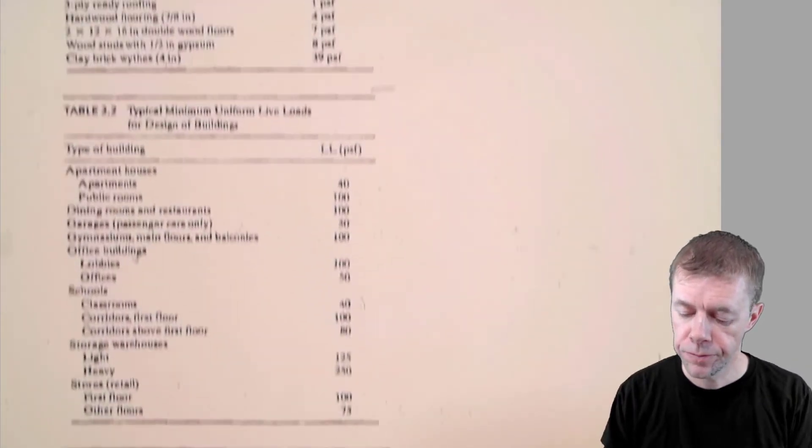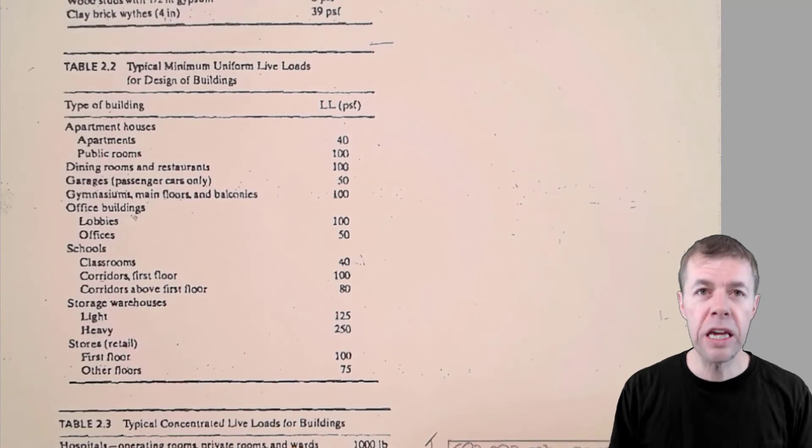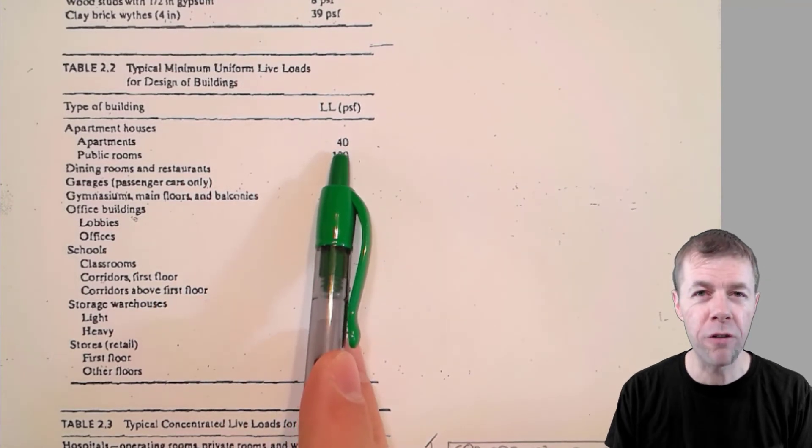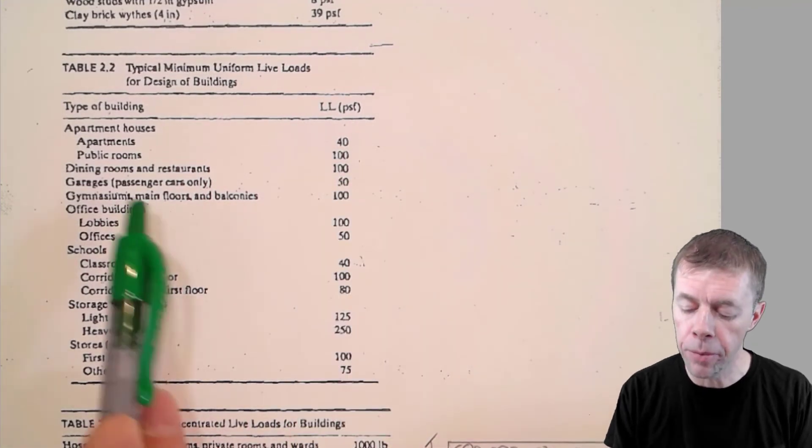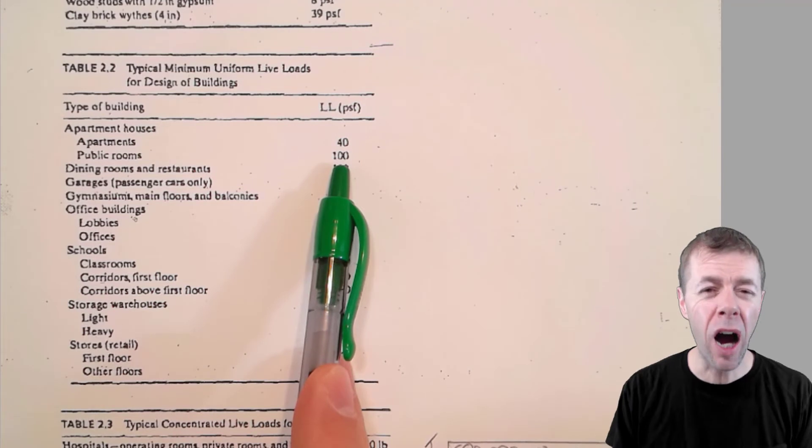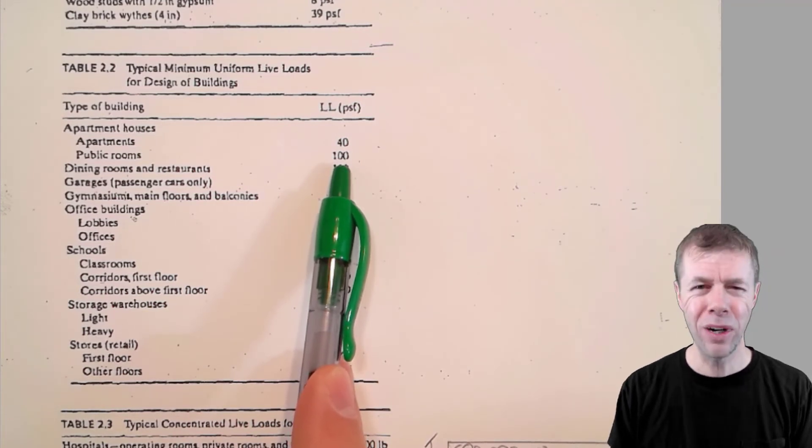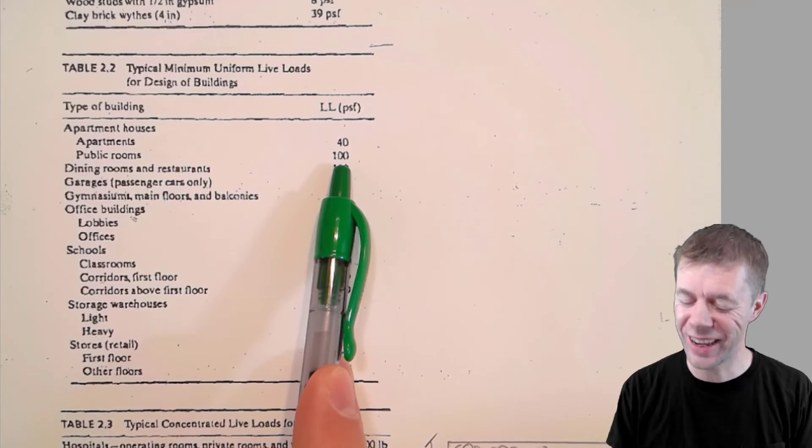Let's talk about live loads. Now, for example, if I'm designing an apartment, it says that it suggests that I need a 40 pounds per square foot live load. But if I go to a public room, I need about a hundred pounds per square foot. What? What is that? I'll get to that in just a second.